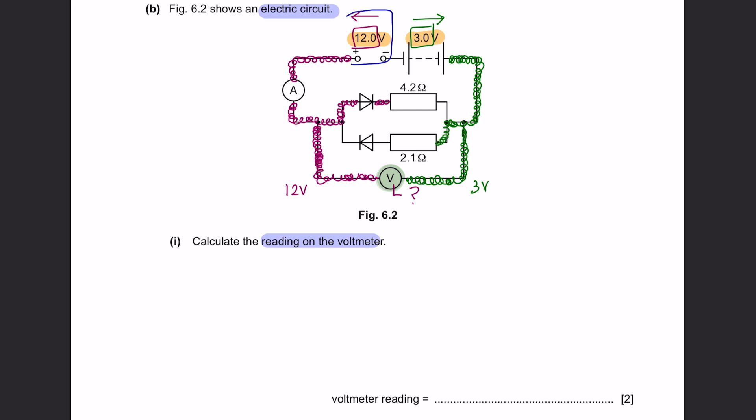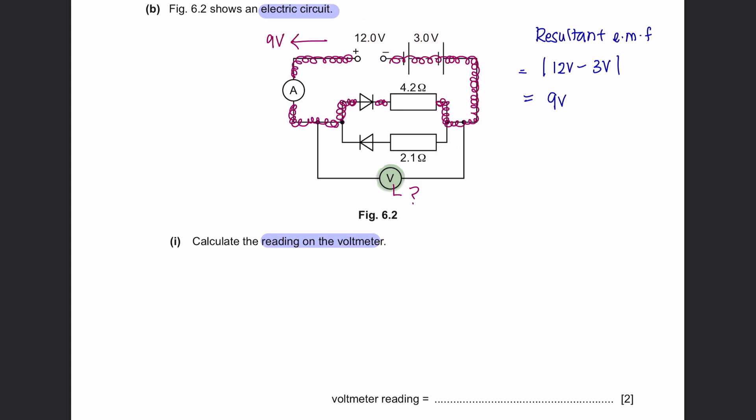The potential difference here is higher, meaning that the resultant voltage would be in this direction at 9 voltage. The reason why the current will only flow in this direction is because there is a diode here. This diode is placed opposite of the current flow, therefore there will be no current flowing in this direction. So the potential difference here would be 9 voltage.